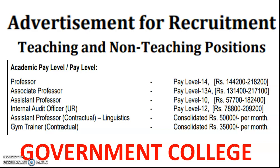The positions include professor, associate professor, assistant professor, and a few non-teaching vacancies. For the assistant professor at pay level 10, the salary range is 57,702 to 1,82,400 rupees per month.